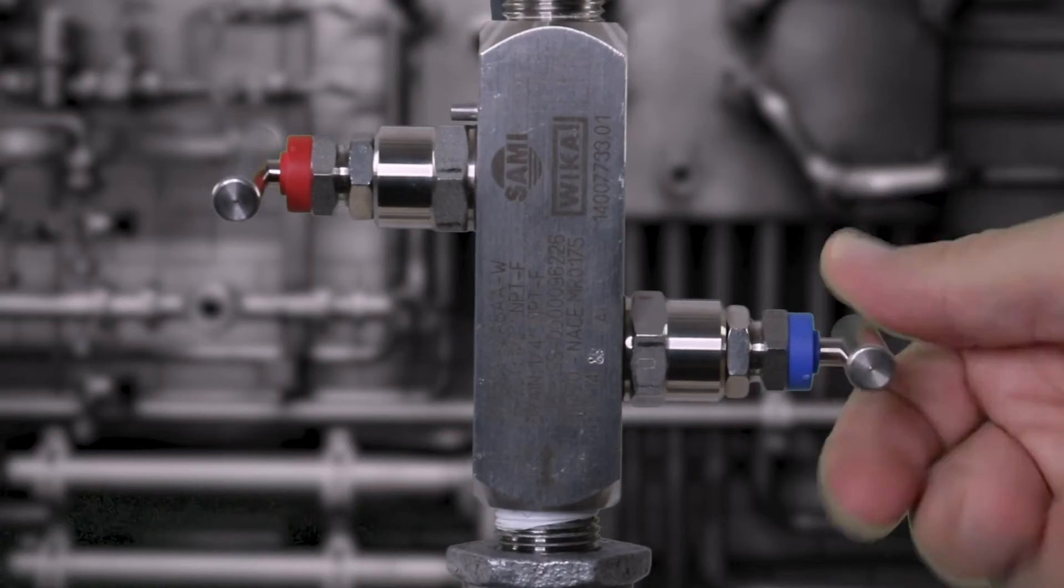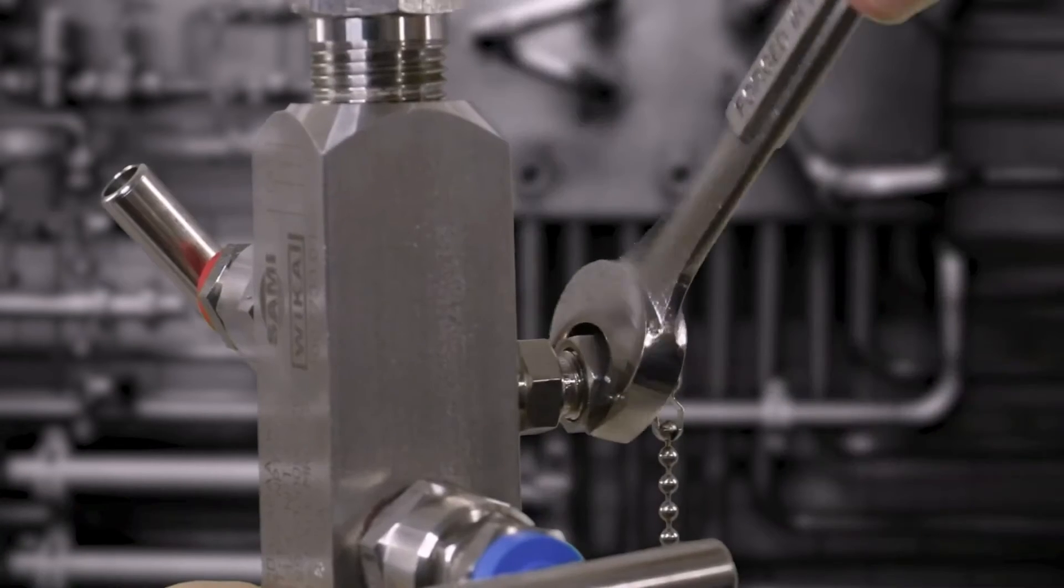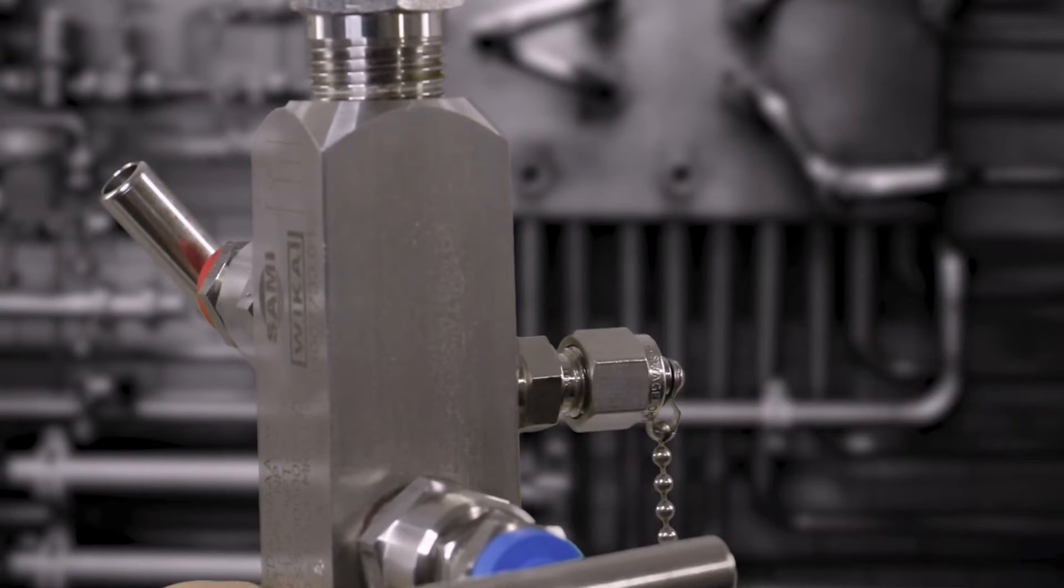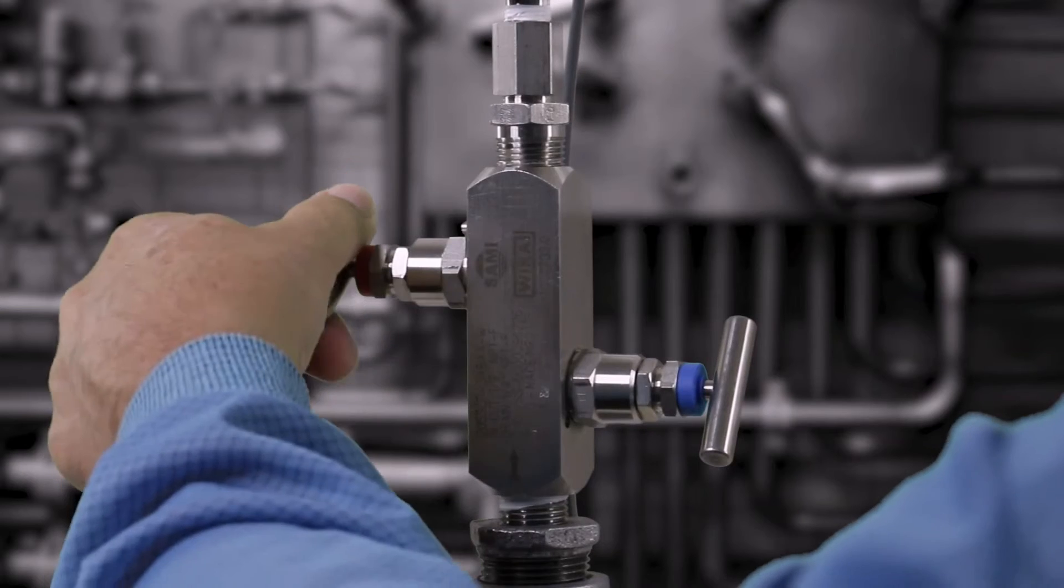Using the manifold, isolate the transmitter from the process using the block valve. Disconnect the cap from the test port on the block and bleed valve. Slowly open the bleed valve to purge any gas or liquid from the transmitter.